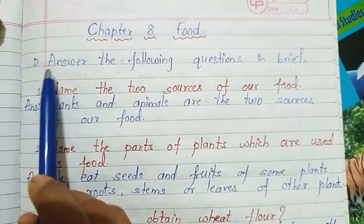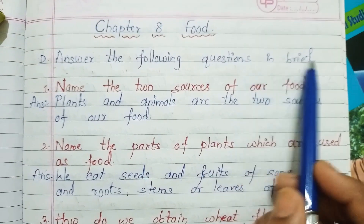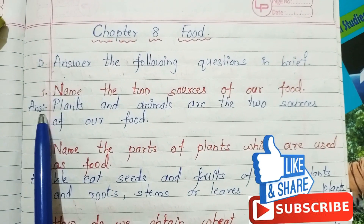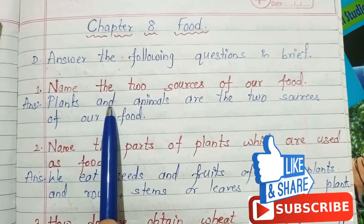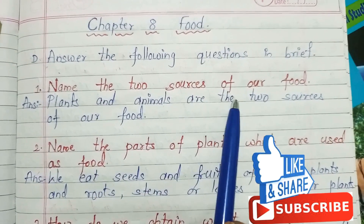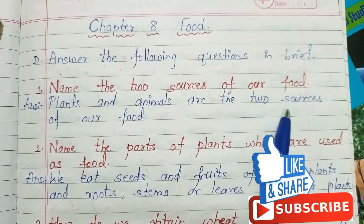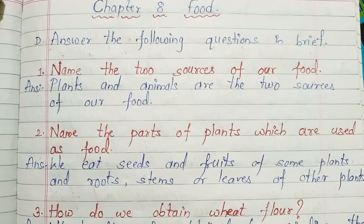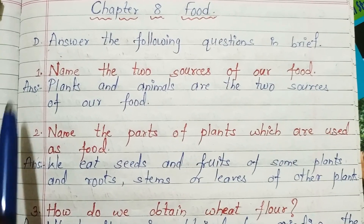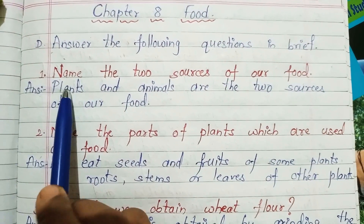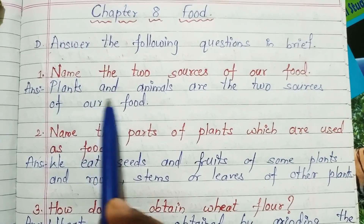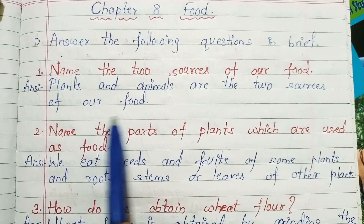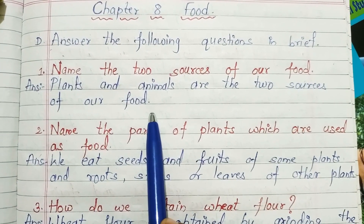Question D: Answer the following questions in brief. Number 1, name the two sources of our food. Answer: plants and animals are the two sources of our food.